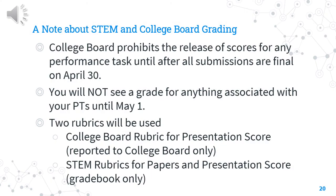Let's talk about STEM grading versus College Board grading. College Board prohibits the release of any scores for a performance task until after all submissions are finalized on April 30th. This means we cannot release those grades or share your rubrics until May 1st. You will not see a grade for anything associated with your performance tasks — rough drafts, final drafts, or presentations — until May 1st. Two rubrics will be used: the College Board rubric for the presentation score sent to College Board to contribute to your AP score, and STEM rubrics for both papers and presentations to contribute to your score at STEM.